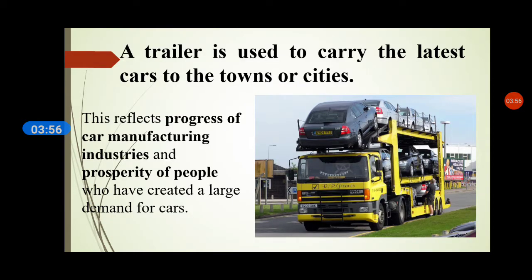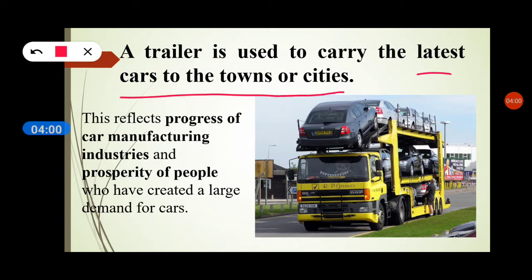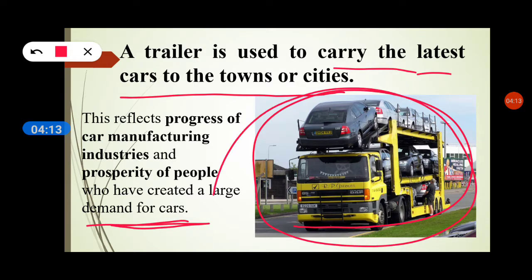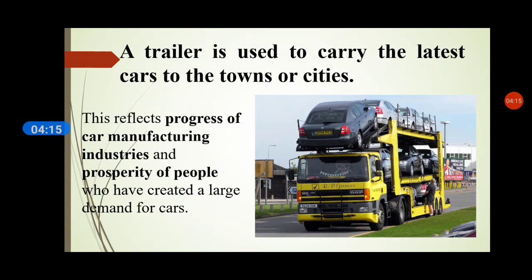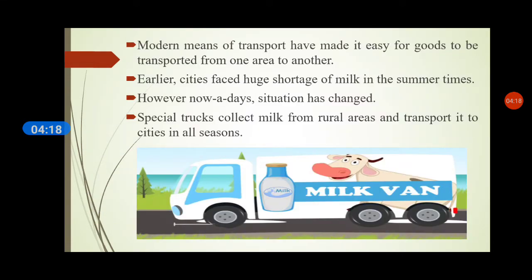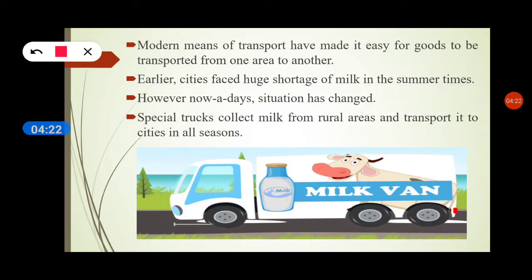A trailer is used to carry the latest cars to towns or cities. This reflects the progress of car manufacturing industries and the prosperity of people, who have created a large demand for cars. Modern means of transport have made it easy for goods to be transported from one area to another.